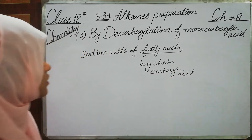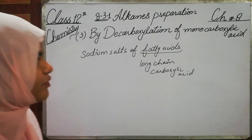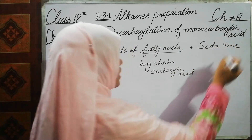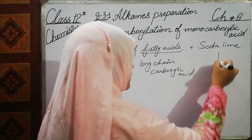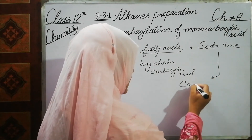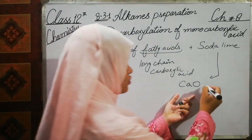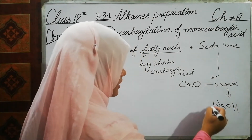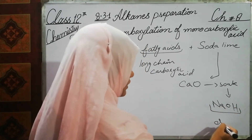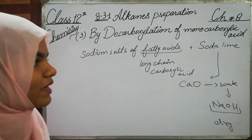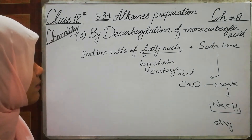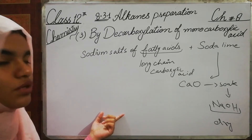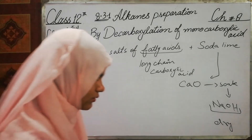We react sodium salts of fatty acids with soda lime. Soda lime is prepared by soaking calcium oxide in sodium hydroxide and then drying this solution. We call this quick lime soda lime. When we react these things and apply heat, we get alkane as a result.